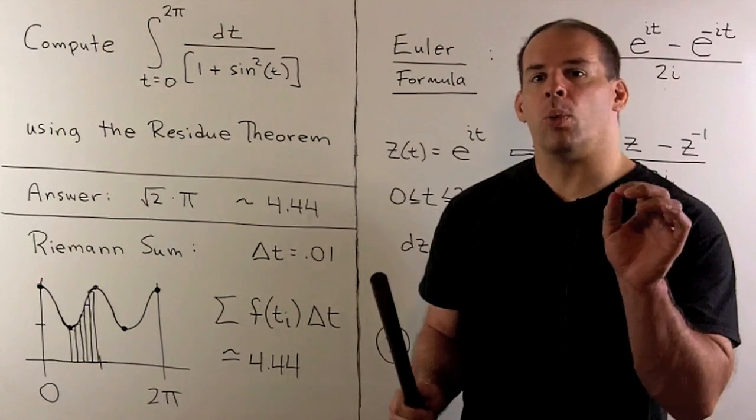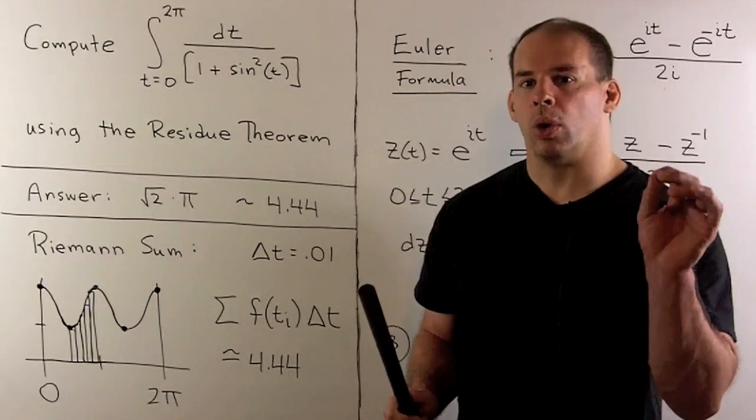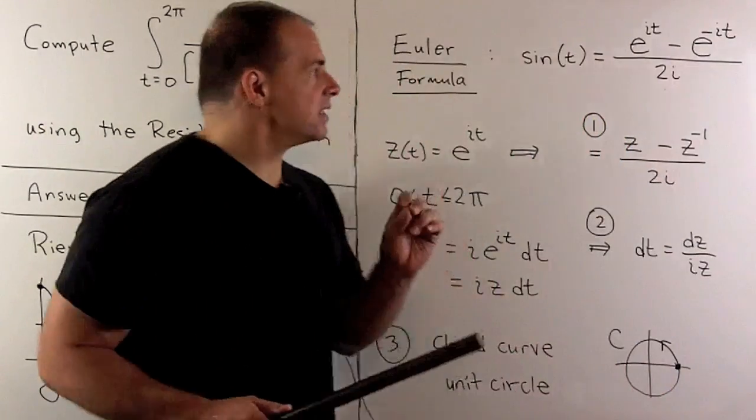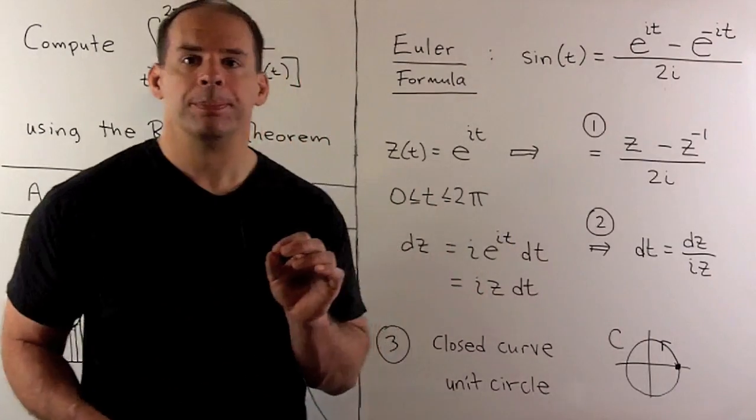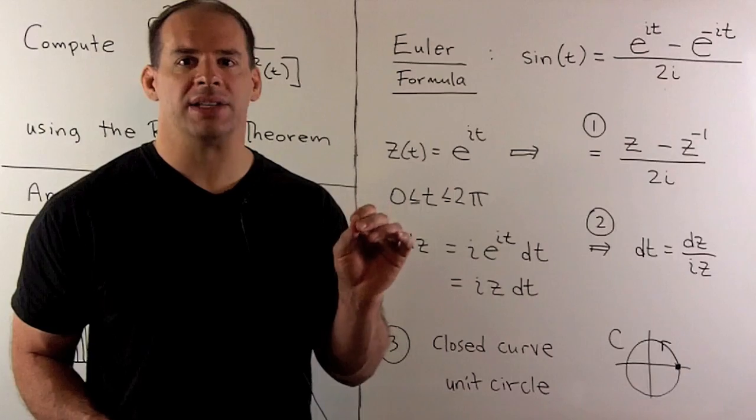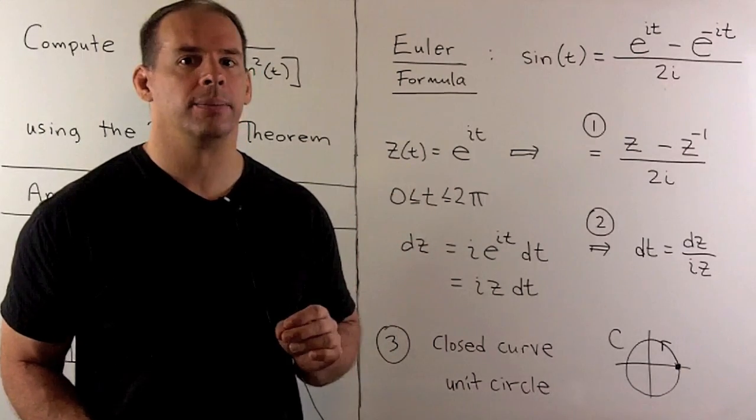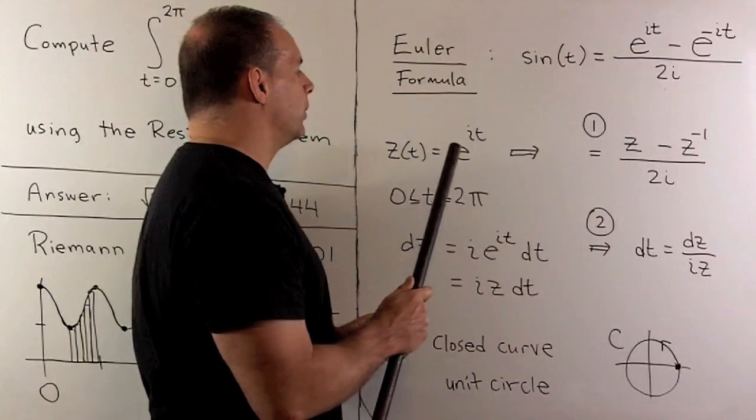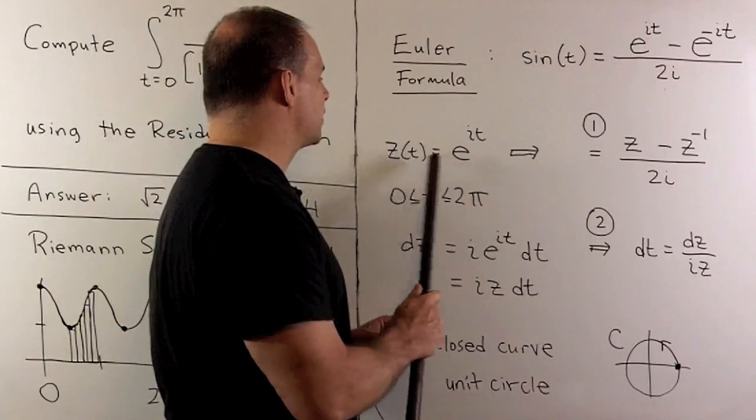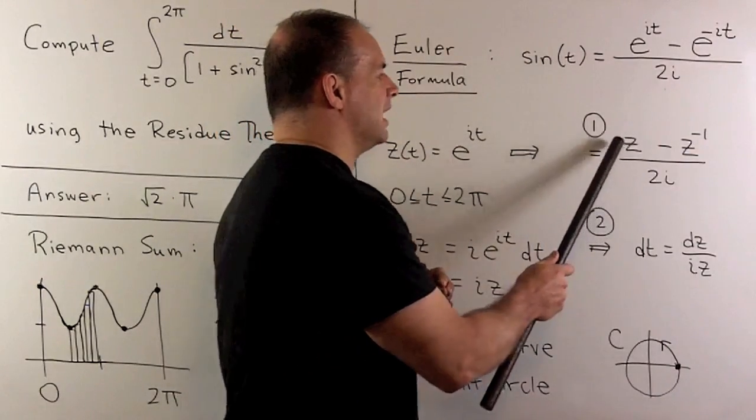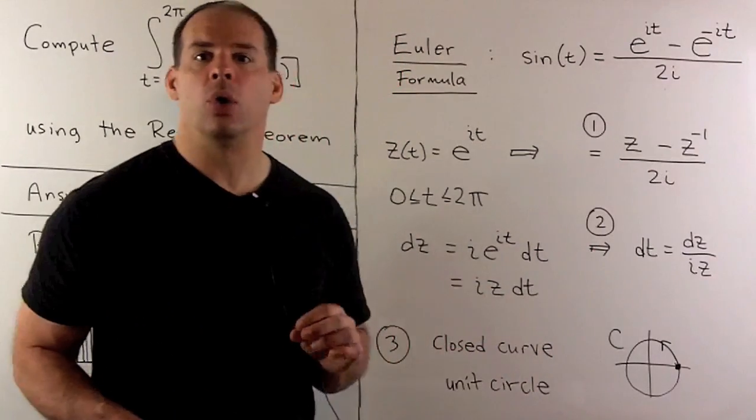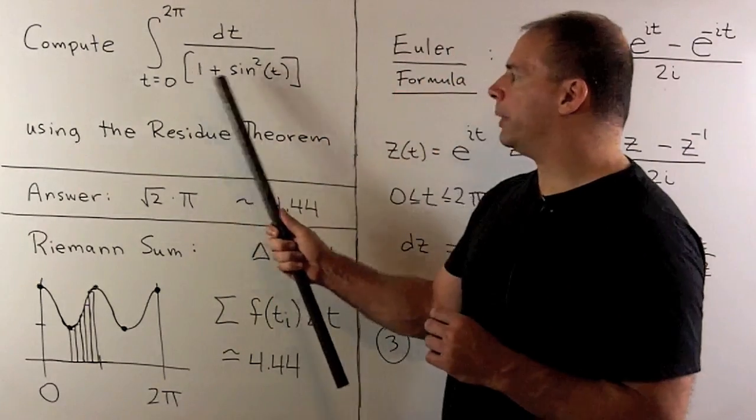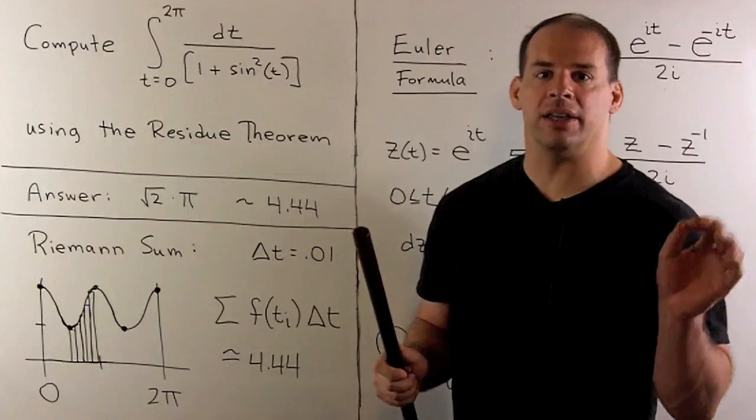To figure out what curve we should use, we'll take a look at Euler's formula for sine. That states, if I take sine of t, it's equal to e to the it minus e to the minus it over 2i. So, I want to use Z(t) equal to e to the it. If I substitute in to sine of t, we're going to get Z minus Z to the minus 1 over 2i. If we put this into our integrand, we'll be able to sort this out to get a rational function in Z.